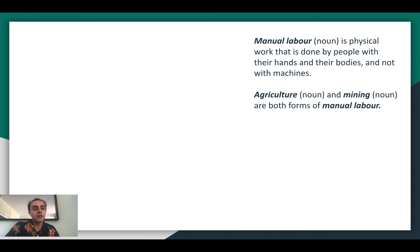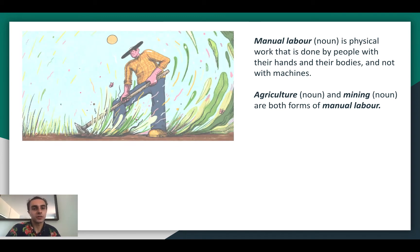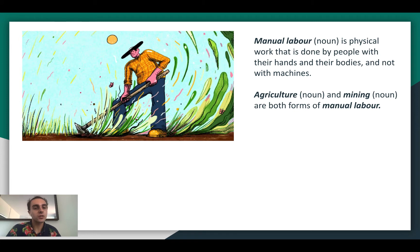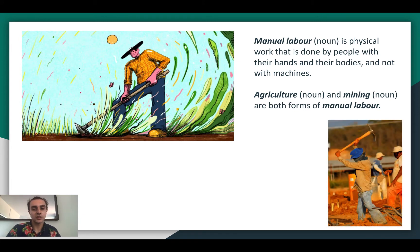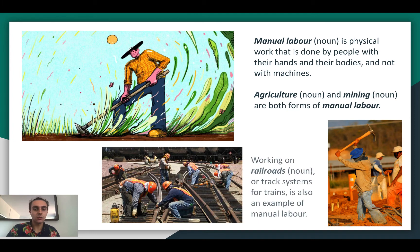It's people's own work with their bodies that is most important. Nowadays agriculture and mining do use machines, but a lot of people still do manual labor. We see agriculture — working on a farm to harvest crops — and mining, where we use a pickaxe to mine underground. Working on railroads, which are track systems for trains, is also an example of manual labor.